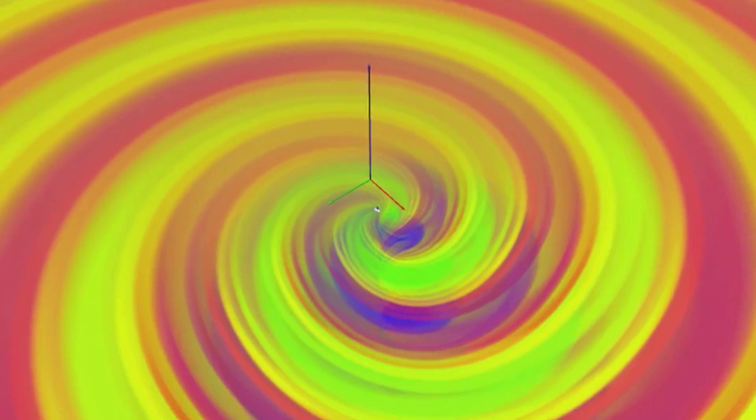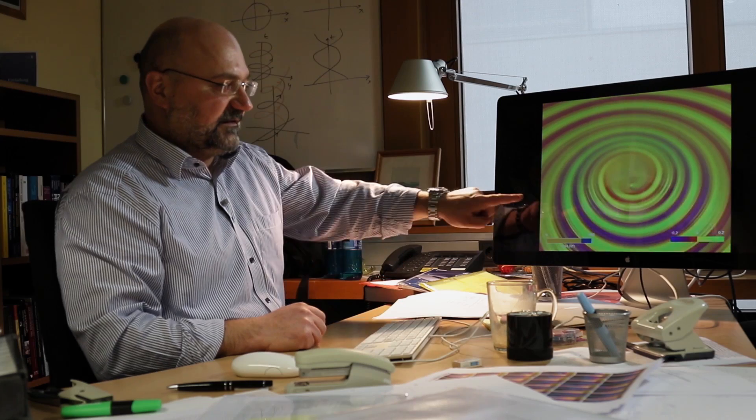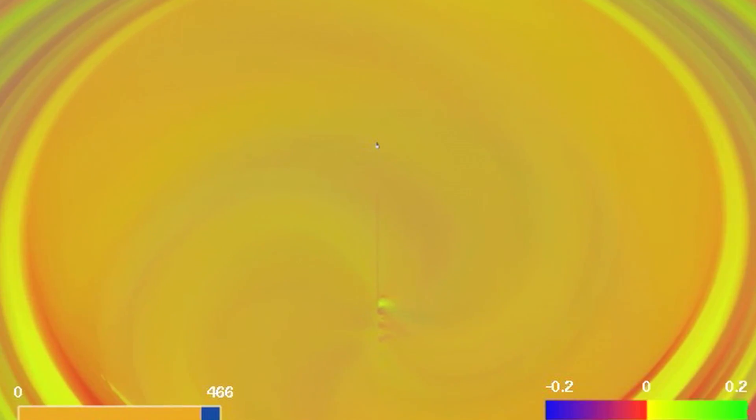And now I zoom out so you can see the gravitational wave field. So this is what has been produced for millions of years. It's just that only at the very end the signal is so strong that it can be detected. So that's the merged black hole.